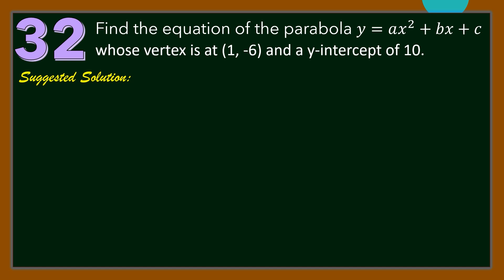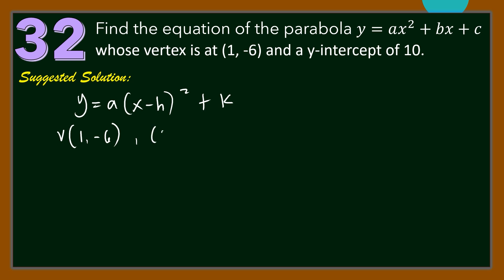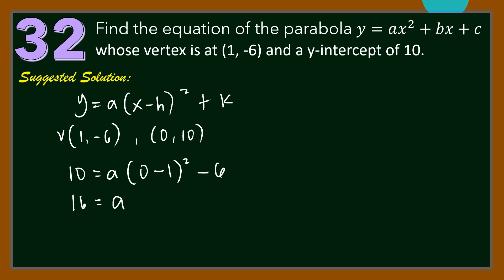For our suggested solution, let us use the vertex form of the equation of the parabola, that is y equal to A times (X minus H) squared plus K, where (H, K) is the vertex. So we have vertex at (1, negative 6), and since the y-intercept is 10, the parabola passes through the point (0, 10). Let us substitute these values: Y is 10, equals A times (0 minus 1) squared plus negative 6. Solving for A, we have 10 plus 6 is equal to A, or A is equal to 16.